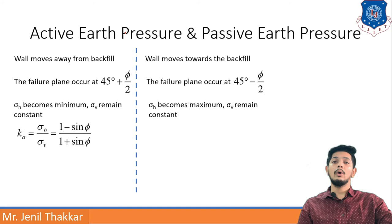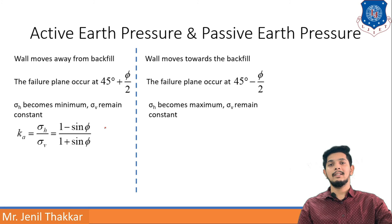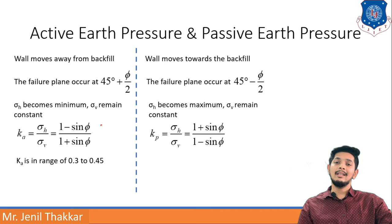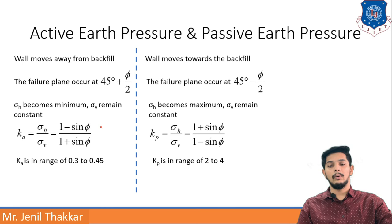The coefficient of active earth pressure KA is defined as σ_h / σ_v = (1 − sin φ) / (1 + sin φ). The coefficient of passive earth pressure KP = σ_h / σ_v = (1 + sin φ) / (1 − sin φ). KA generally ranges between 0.3 to 0.45, while KP ranges between 2 to 4. This is an important distinction for exams.